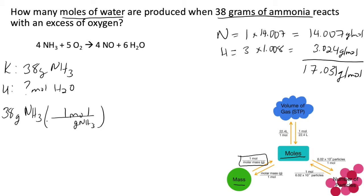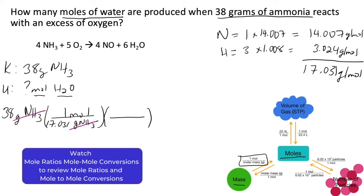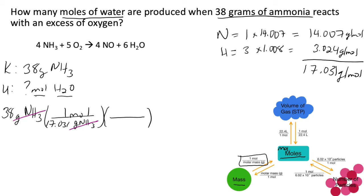To add the molar mass into my conversion factor, I have grams at the bottom, so 17.031 goes at the bottom and moles at the top. This cancels out the grams of ammonia and leaves moles of ammonia. But we want moles of water, not moles of ammonia, so we have another conversion to do. Note that the mole map does not include this step: when going from moles of one substance to moles of another, you will use a mole ratio.